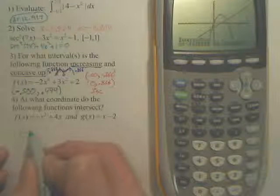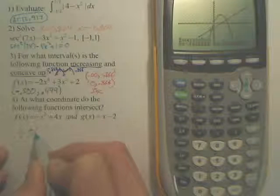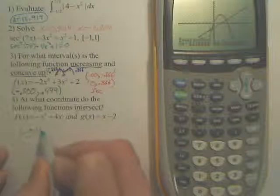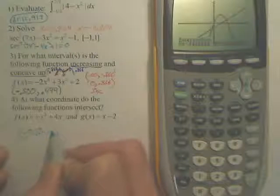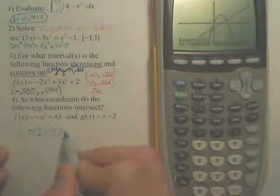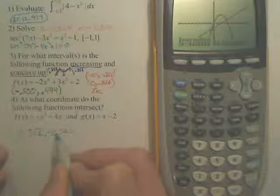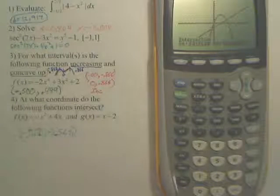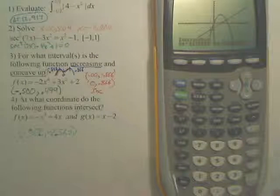So the first coordinate is negative 0.561, or 2, comma, negative 2.562. There's the first intersection point.